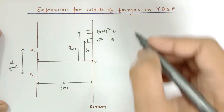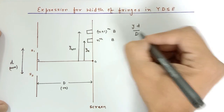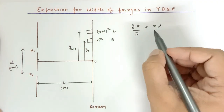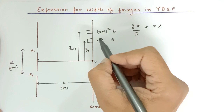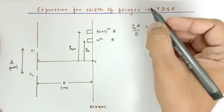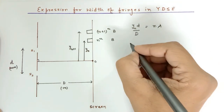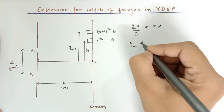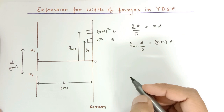We know that (y · d) / D = n·λ is the path difference equation for constructive interference. For the nth bright fringe at distance y_n, we write: (y_n · d) / D = n·λ. Similarly, for the (n+1)th bright fringe: (y_{n+1} · d) / D = (n+1)·λ. I'll call these equation one and equation two.